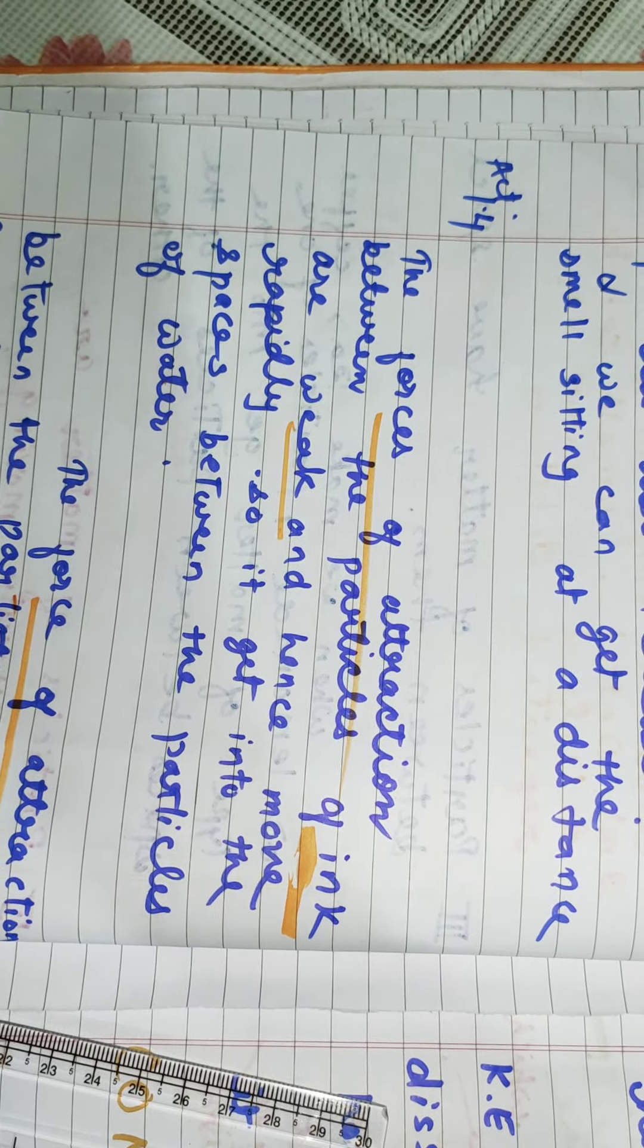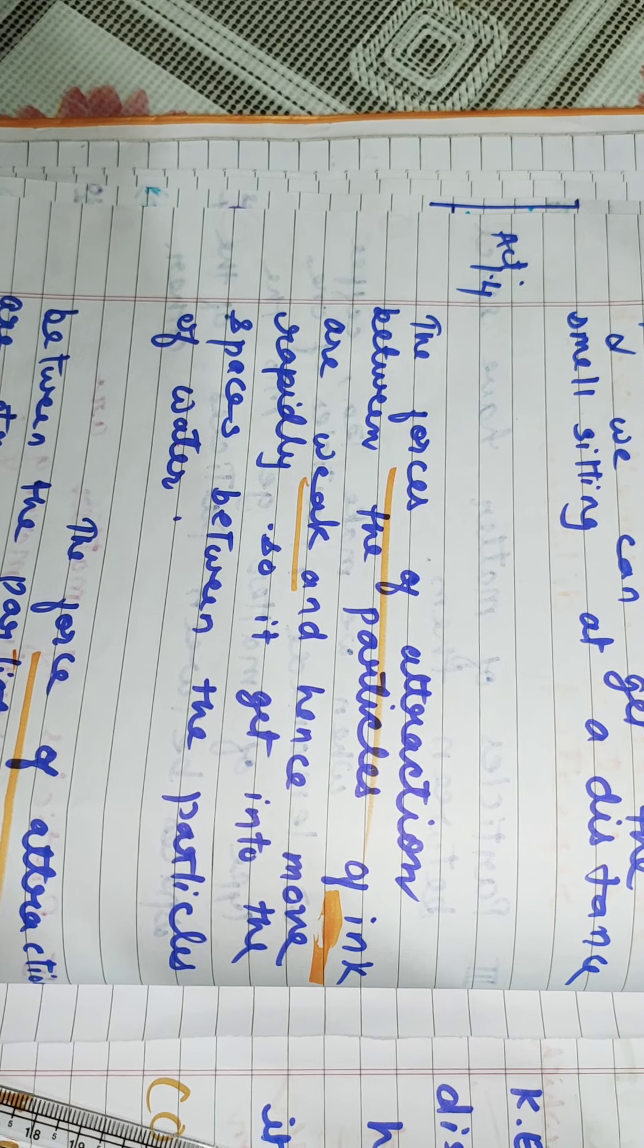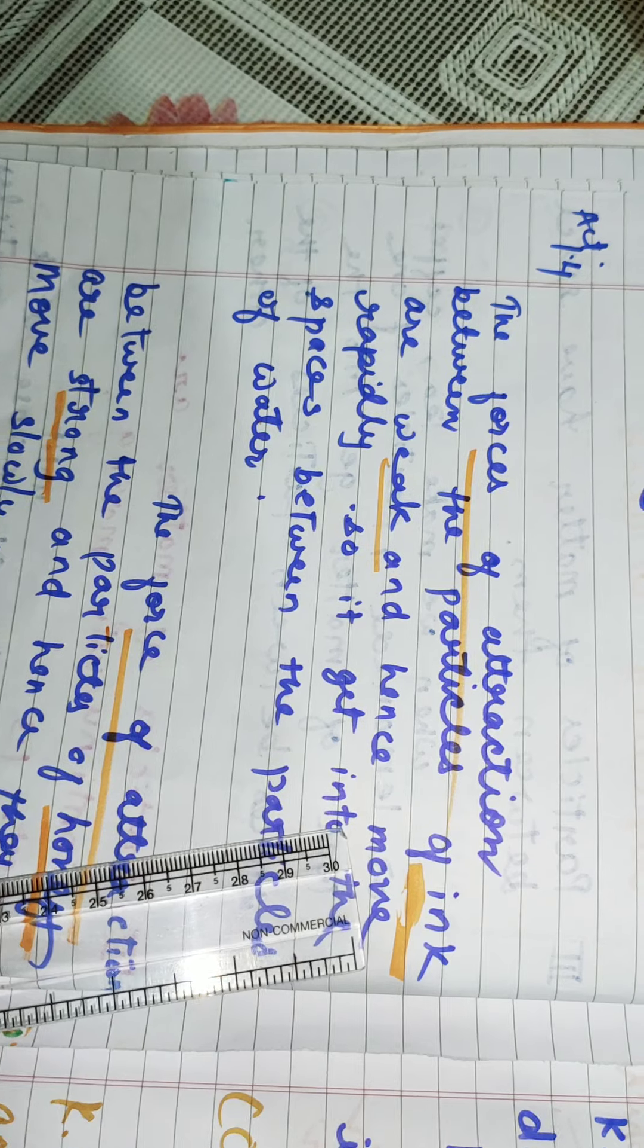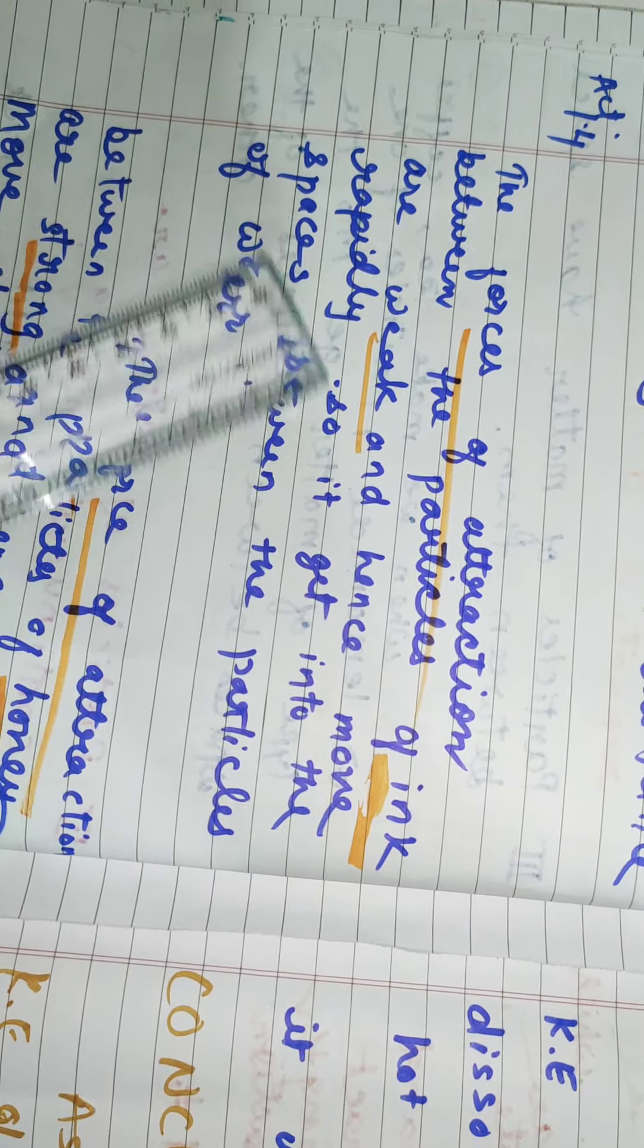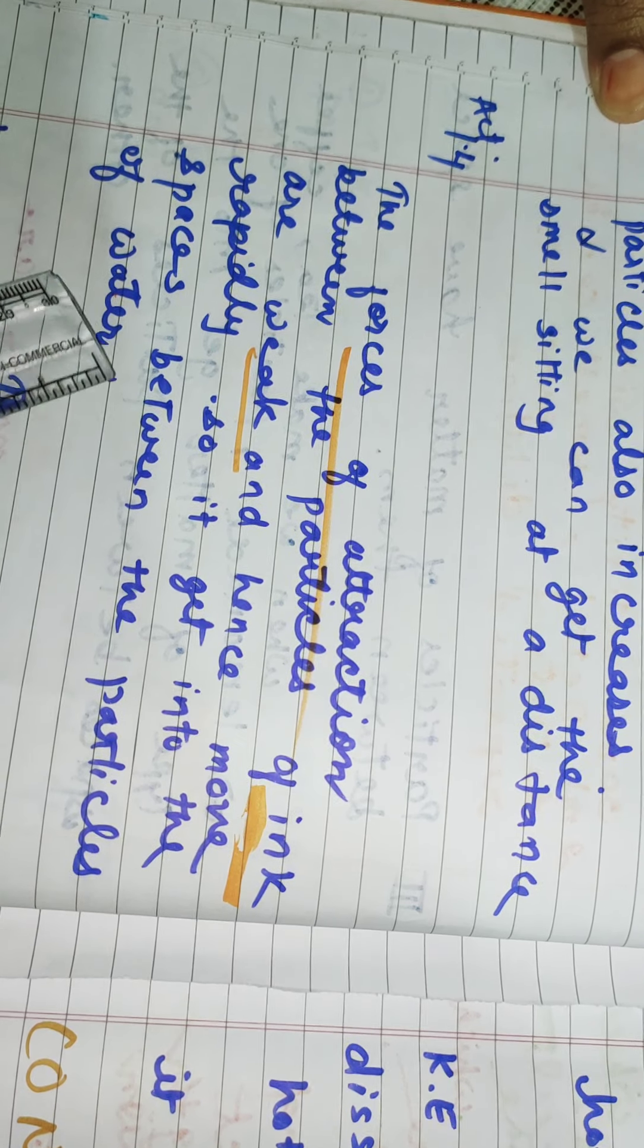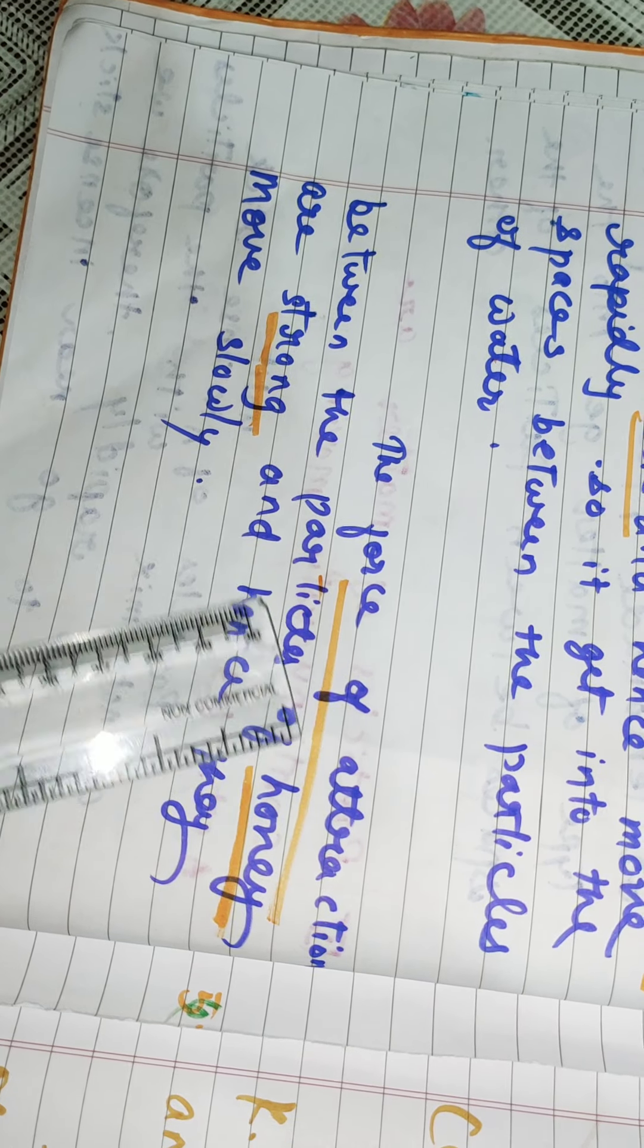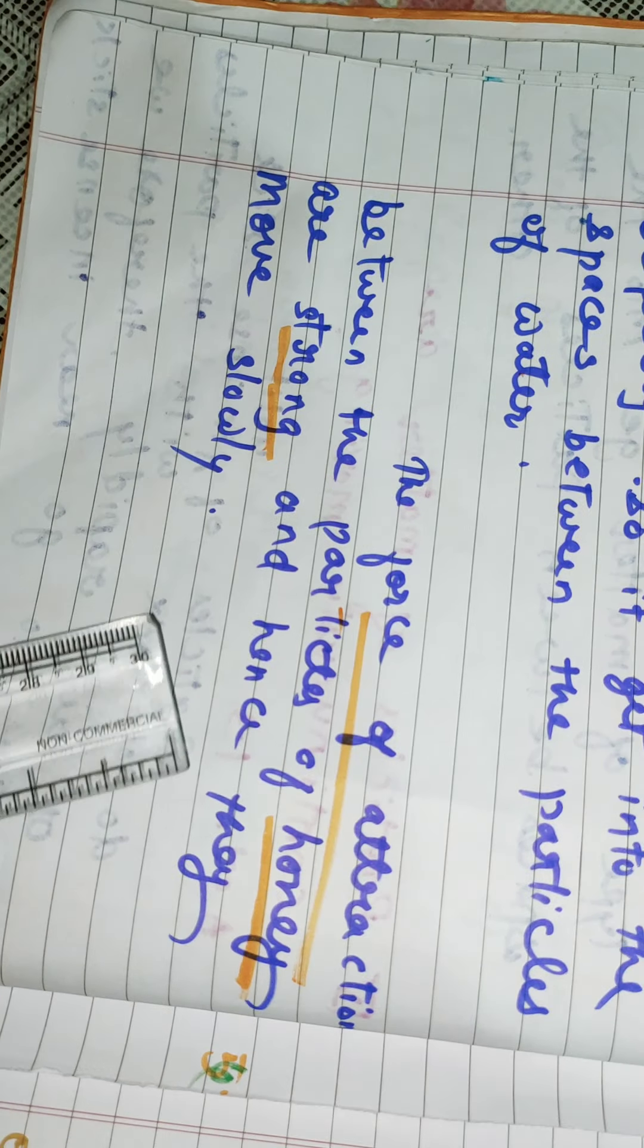Now the next activity is activity 1.4. In this activity, you have to take a beaker and fill it with water. In the first beaker, you have to take water and drop ink in it. It can be either blue or red. What you will observe? As you know that the force of attraction between the particles of ink are weak and hence move rapidly, it gets into the space between the particles of water. When you add honey to the beaker containing water, you will find the force of attraction between the particles of honey are strong and hence they move slowly.